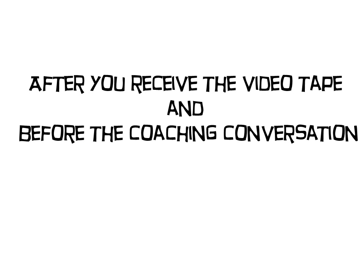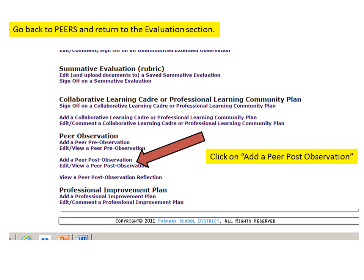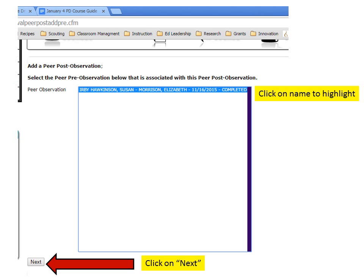After you see the video and before the coaching conversation, go back into PEERS and return to the Evaluation section. Then click on Add a Peer Post-Observation. Click on your name at the top, highlight it, and then click Next at the bottom of the screen.